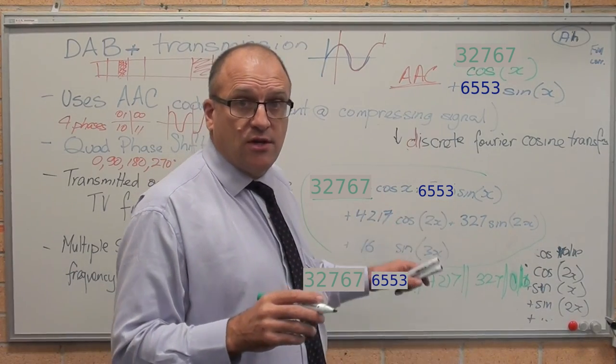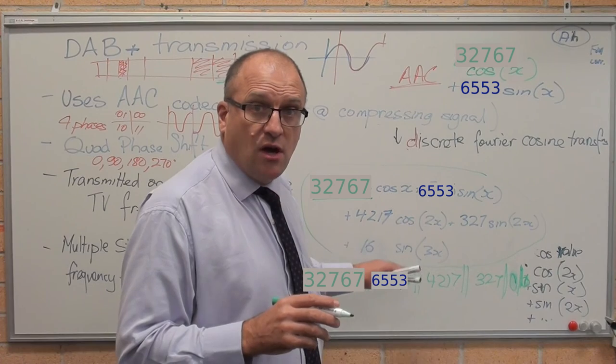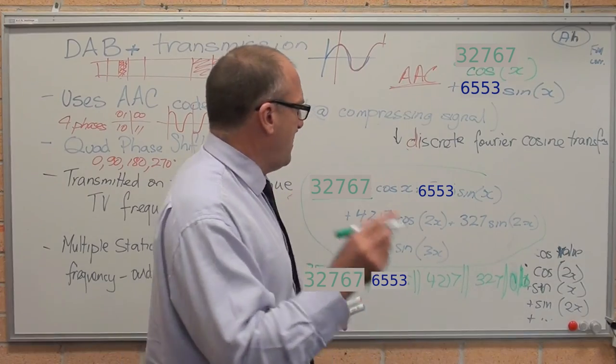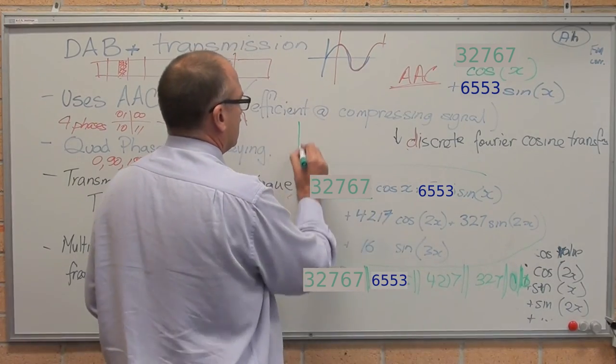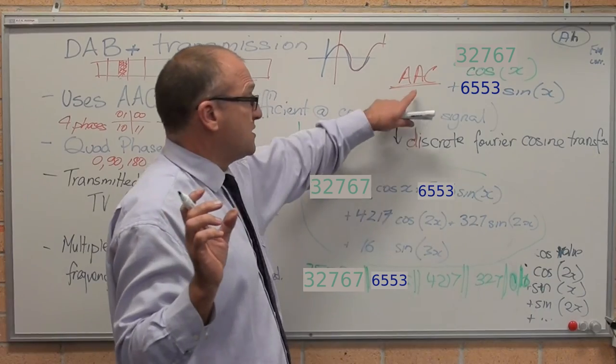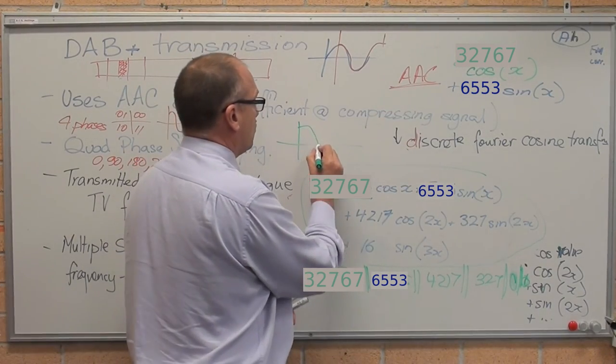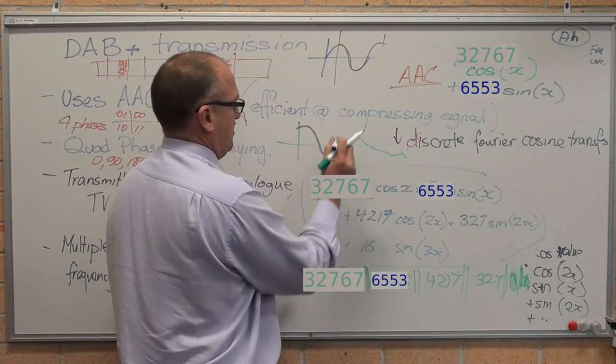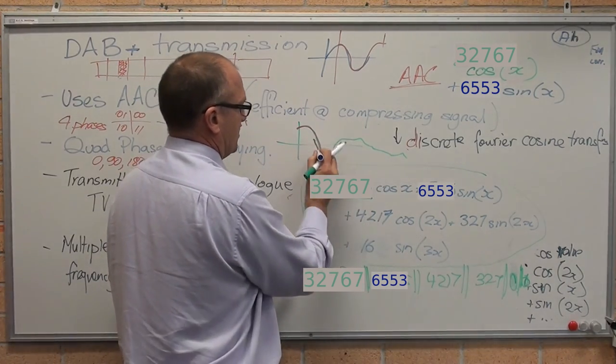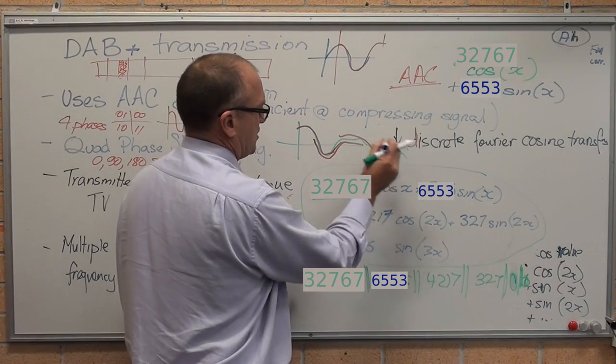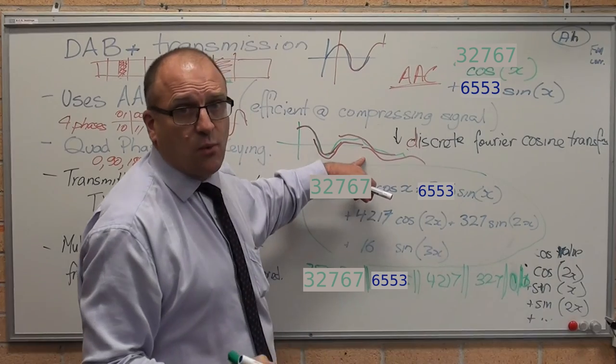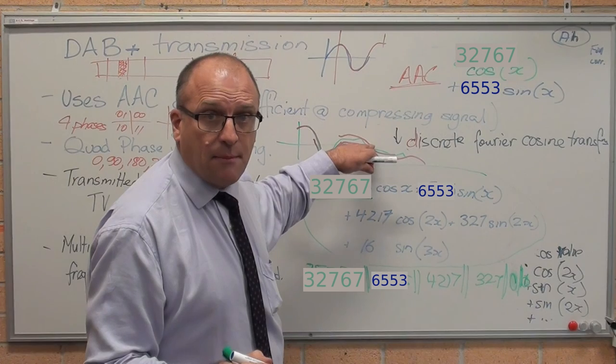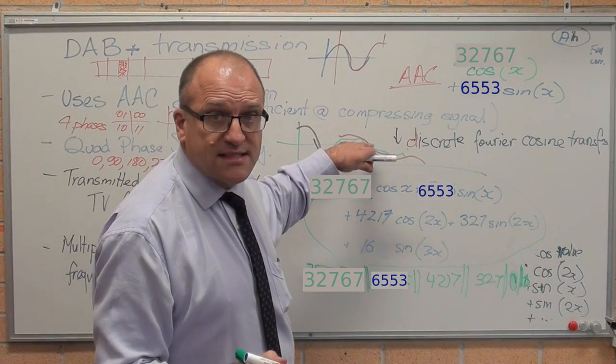So all you're doing is you've turned a sound wave into a series of mathematical functions and just send the mathematical function over the airwaves. Remember as well, the advantage of this advanced audio codec is it sends the signal twice. So if there's our sound wave, it sends this bit, then it sends this bit, then it sends this bit, then it sends that bit. So all the sound waves overlap. So if there's an error in transmission it gets picked up and fixed, improving its accuracy of transmission.